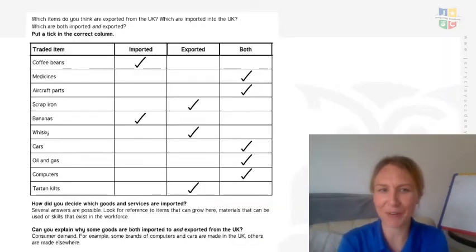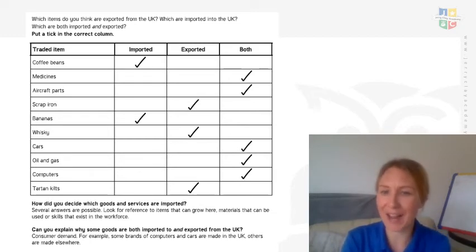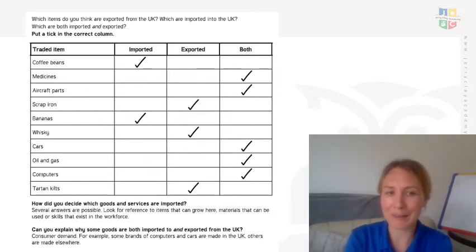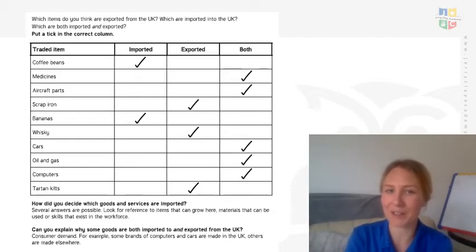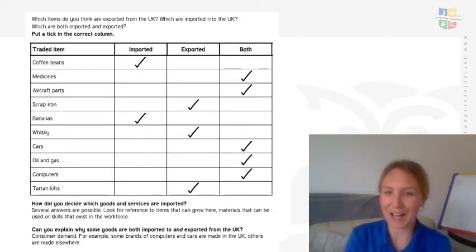So coffee beans are imported. Medicines and aircraft parts are imported and exported. Scrap iron is exported — so we sell that to other countries. Bananas are imported. Whiskey is exported. Cars, oil and gas, and computers are both imported and exported. And tartan kilts are exported — so sold to other countries.